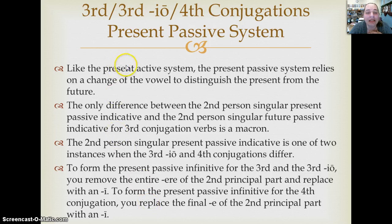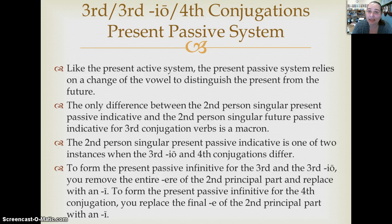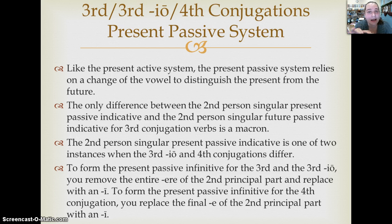Like the present active system, the present passive system relies on a change of a vowel to tell the difference between the present passive and the future passive indicative. Just like in the present active indicative you have O, Is, It, Amos, Itis, Unt — you are going to have that I telling you that you're in the present passive as well.